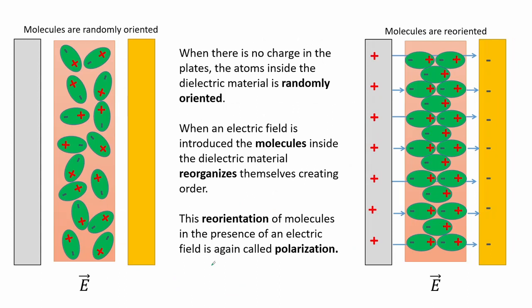When there is no charge on the plates, the atoms inside the dielectric material are randomly oriented. When an electric field is introduced, the molecules inside the dielectric material reorganize themselves, creating order. This reorientation of molecules in the presence of an electric field is called polarization.